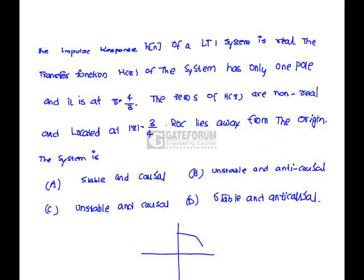Suppose this is the unit circle in the z domain. This is sigma, that is j omega. Now complex zeros are located less than the unit circle, that is 0.75. So radius is 0.75. Somewhere assume these are the zeros.